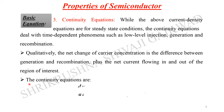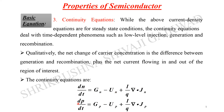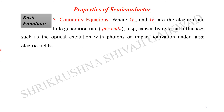The continuity equations describe the rate of change of carrier concentrations. The generation rate is g_n and the recombination rate is U_n, plus the net current term (1/q)·del·J_n. Similarly for holes: dp/dt = g_p − U_p + (1/q)·del·J_p. Here g_n and g_p are the generation rates per cm³/s caused by external influences such as optical excitation or impact ionization under large electric fields.